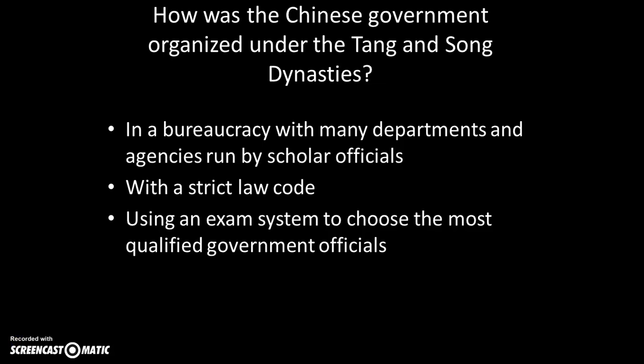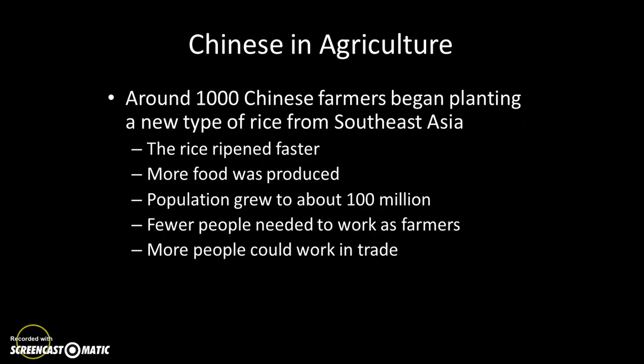The ways Song China gained strength as an imperial state were very similar to the Tang Dynasty. They created a bureaucracy with many different departments and agencies run by scholar officials — the people who took and passed the civil service exam. They had a strict law code and used the exam system to ensure the most educated and ethical men were running the government.